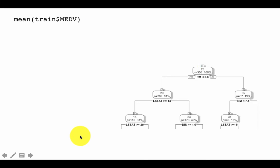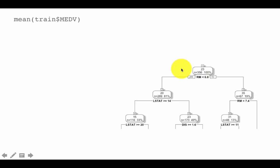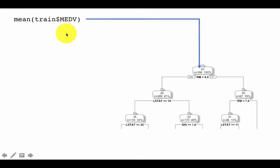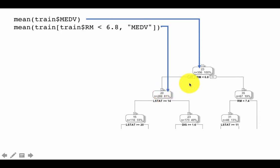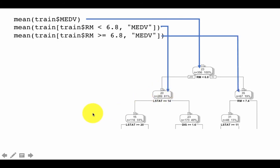We can cross-check our calculations. The prediction for the root node with one node should be the average of all cases, and indeed mean(train$medv) equals 23. For the node covering cases with rm less than 6.8, the prediction of 20 should be the average of all such cases, and mean(train[train$rm < 6.8, 'medv']) equals 20. This confirms that the predicted value at each node is simply the average of the target attribute for all cases satisfying that node's conditions.